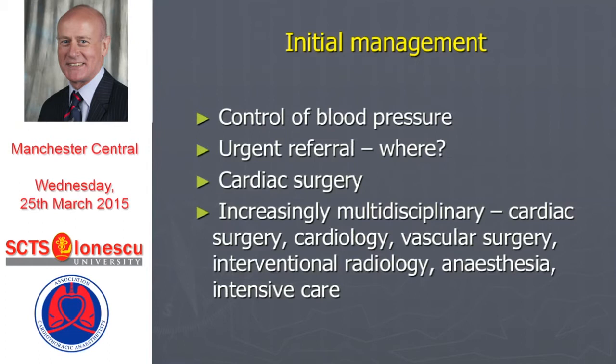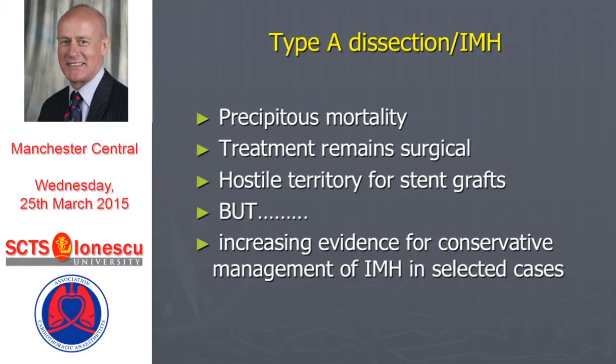Type A dissection and intramural hematoma are probably still largely regarded as similar enough entities with precipitous mortality, and therefore by and large the intervention remains surgical if the patient is regarded as a surgically fit candidate. It's an incredibly hostile territory for stent grafts, and at the moment there isn't really, apart from very limited cases, the anatomical configuration to deploy a stent graft. But there is evidence of a role for relatively conservative management of intramural type A hematoma in selected cases.